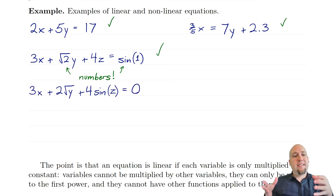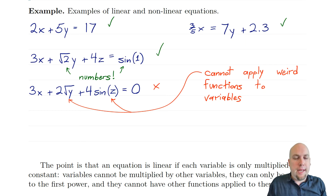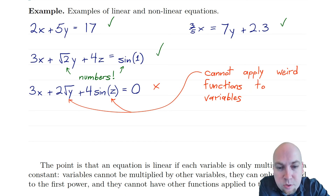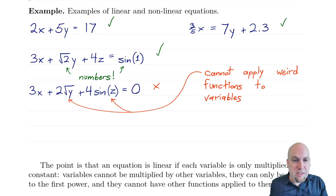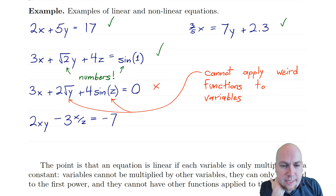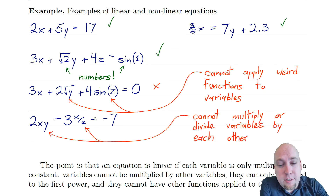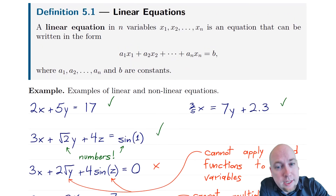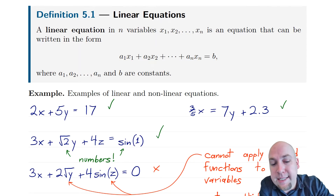On the other hand, if I took the sine of a variable or square-rooted a variable, that's not a linear equation. For example, 3x is fine, but 2 times the square root of y — that's a problem. You can't do weird things to variables: no square roots, no powers other than 0 or 1, no trig functions of variables, no exponentials of variables. Also, 2·xy minus 3x/z = −7 is not linear either — you can't multiply variables together or divide variables by each other. There's no way to rewrite that in standard form.